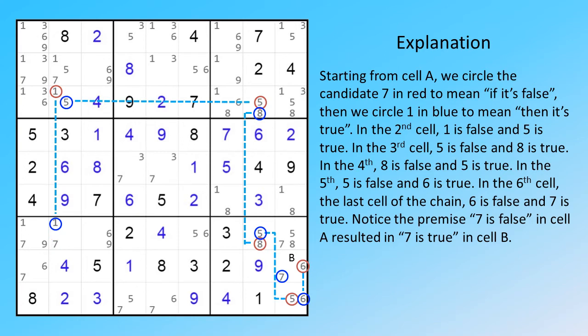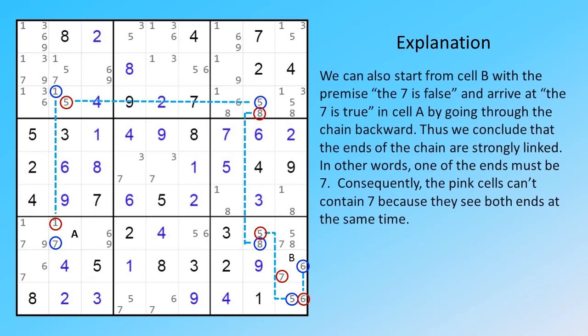Notice the premise — 7 is false in cell A — resulted in 7 being true in cell B. We can also start from cell B with the premise that 7 is false, and arrive at 7 being true in cell A by going through the chain backward. Thus we conclude that the ends of the chain are strongly linked. In other words, one of the ends must be 7. Consequently, the pink cells can't contain 7 because they see both ends at the same time.